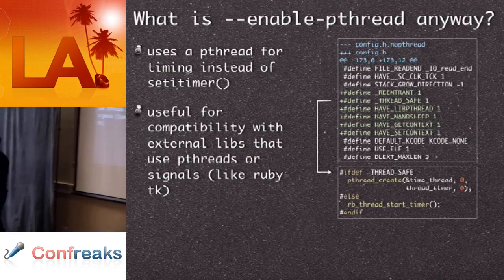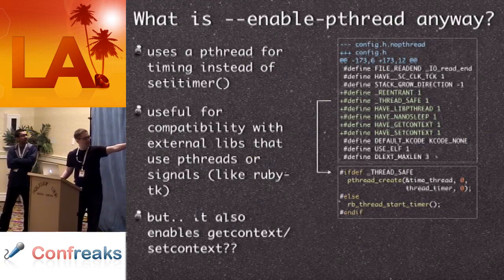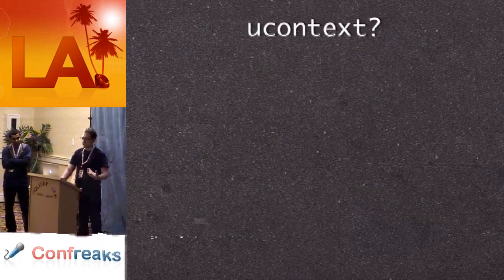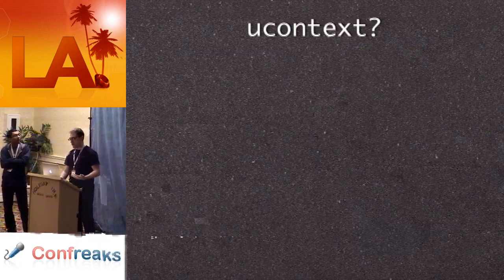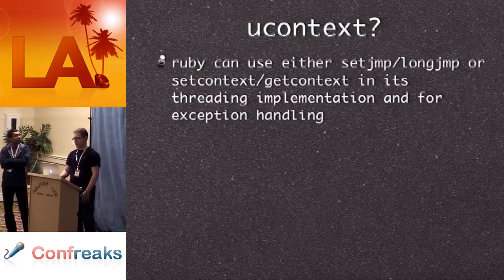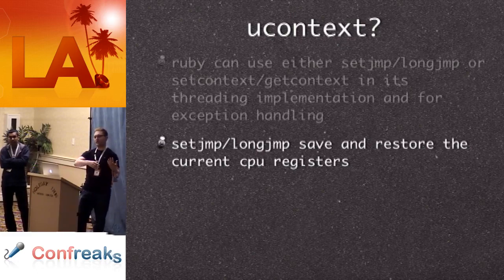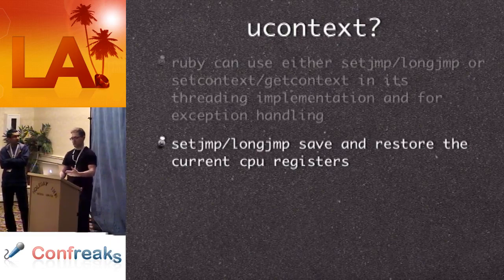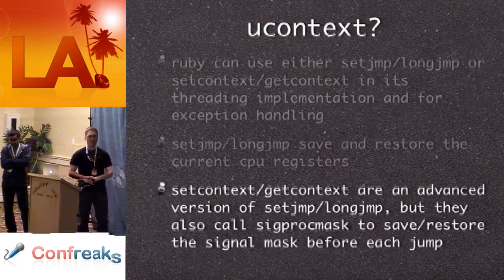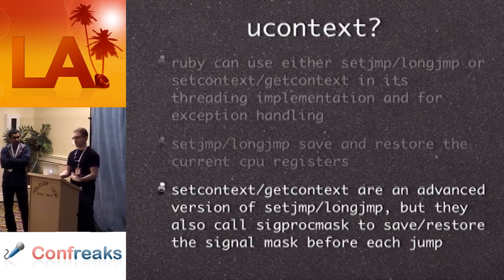If you look at the diff of what happens when you enable --enable-pthread, you get these other defines that pop up, and those defines create your timer thread. And the bottom two defines enable get_context and set_context. So what are those functions? It turns out get_context and set_context are part of a system called ucontext. Ruby can either use setjmp/longjmp or setcontext/getcontext in the threading implementation and for exception handling. They save and restore the current CPU state. The downside is these two functions also save and restore the signal mask and hence call sigprocmask — which is why we're hitting three and a half million calls every time we run Ruby.